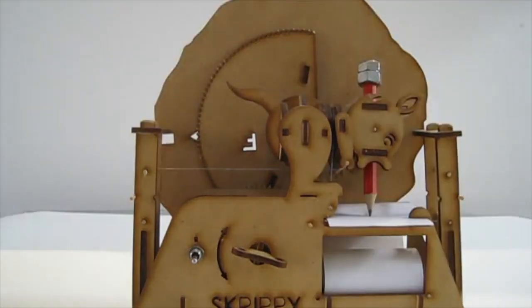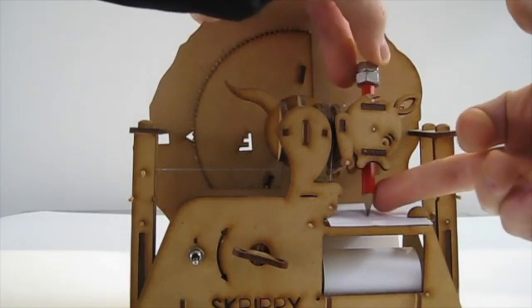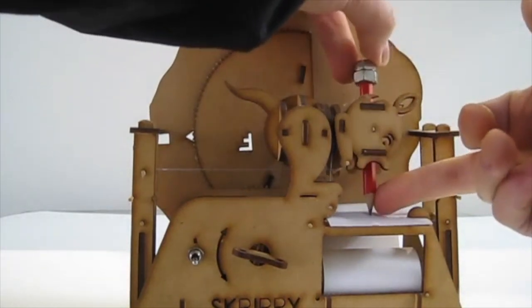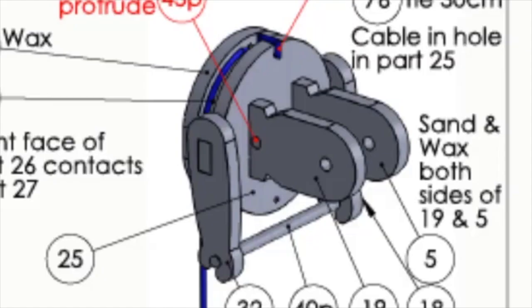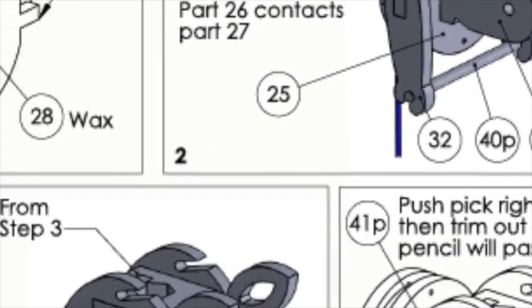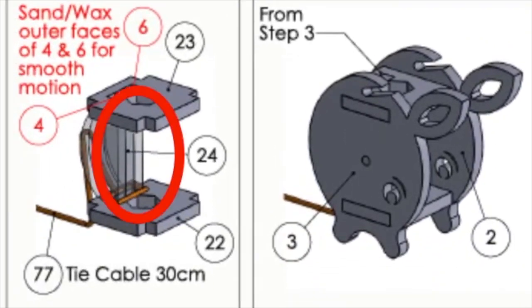The next step was how do I actuate the rotation of that gimbal. So, I have used strings around constant radius drums on each axis, so that each degree that the head rotates always corresponds with the same amount of string wound on or off the drum.